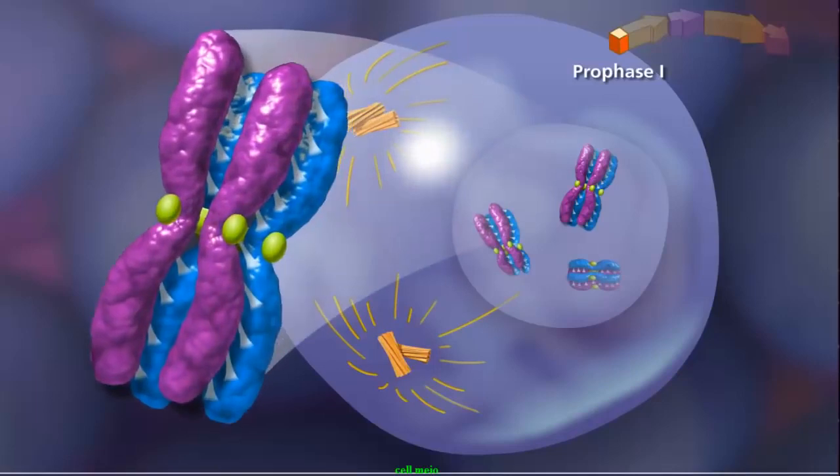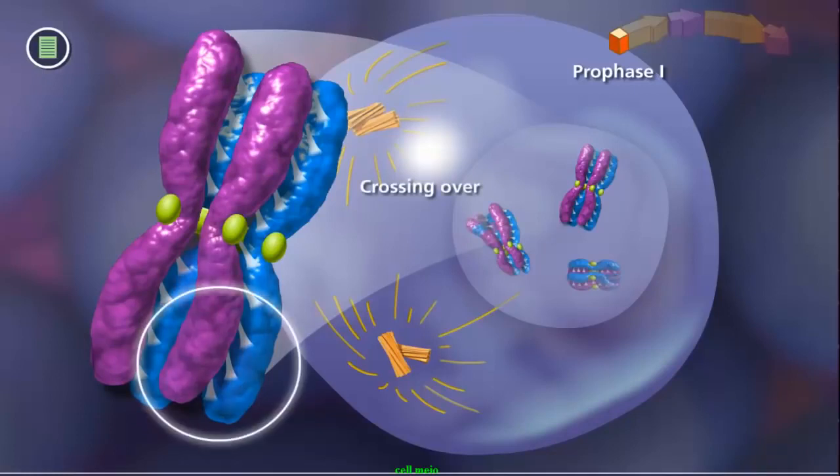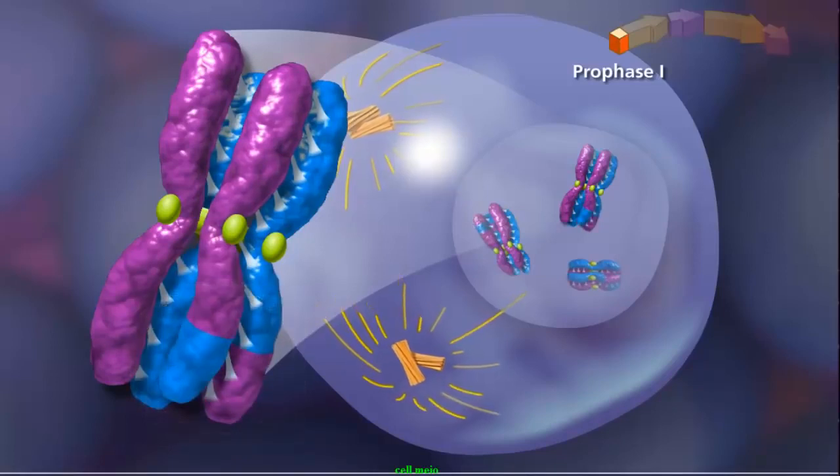Once this structure is formed, the second event, called crossing over, can occur. During crossing over, a physical exchange between chromosome segments of non-sister chromatids occurs, increasing genetic diversity.